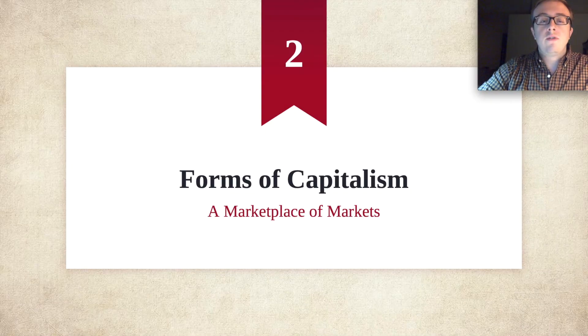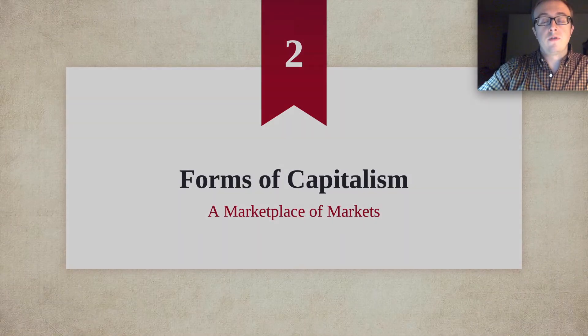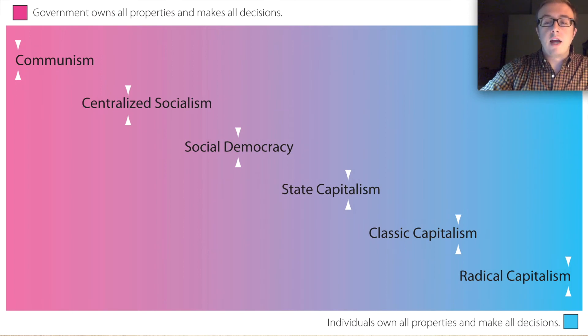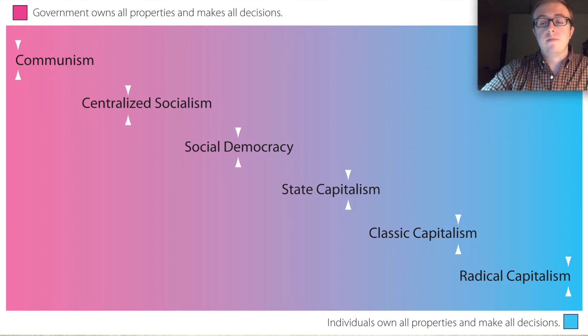So we're going to really define what we mean by that. We're going to go over these forms of capitalism, which are all the things more on the blue side over here. This includes things like state capitalism, classic capitalism, and radical capitalism.